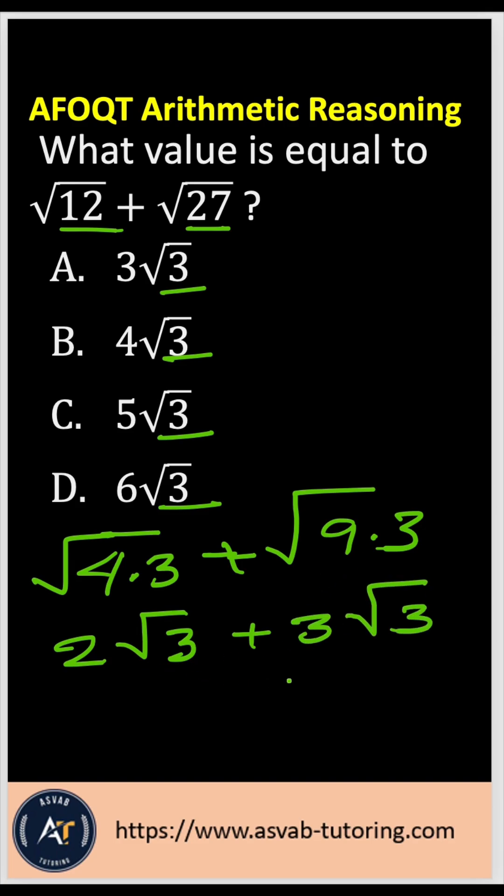So if you want to add a square root, you need to add only the outside of the square root and inside the square root has to be the same. So in that case, you have to add 2 plus 3 that gives you 5 square root of 3. So the correct answer is option C.